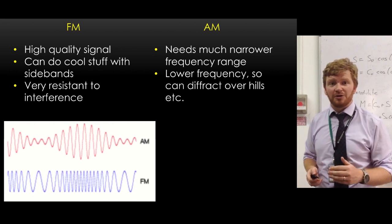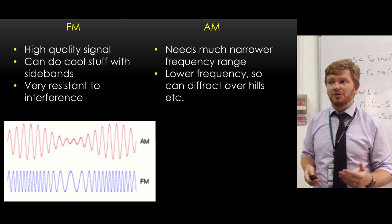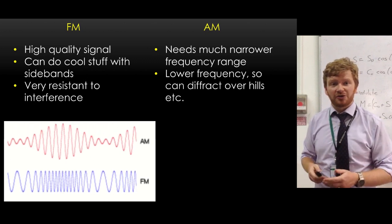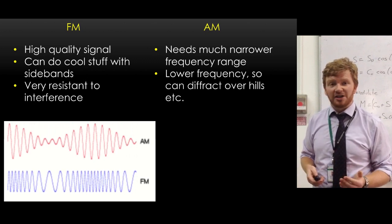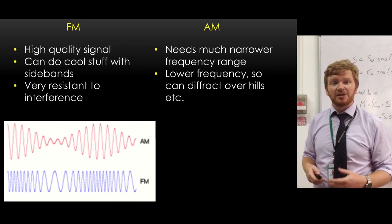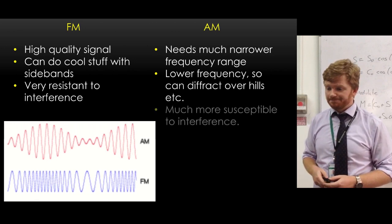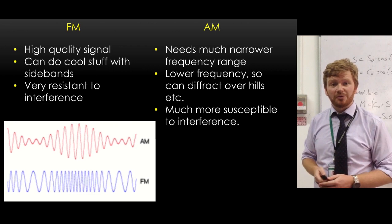Also, because AM is actually broadcast at lower frequency, diffraction, as you know, the longer your wavelength, the greater your diffraction. So you can diffract AM radiation over hills. So that can become quite useful if you live in rural areas. But as I say, it's much more susceptible to interference.